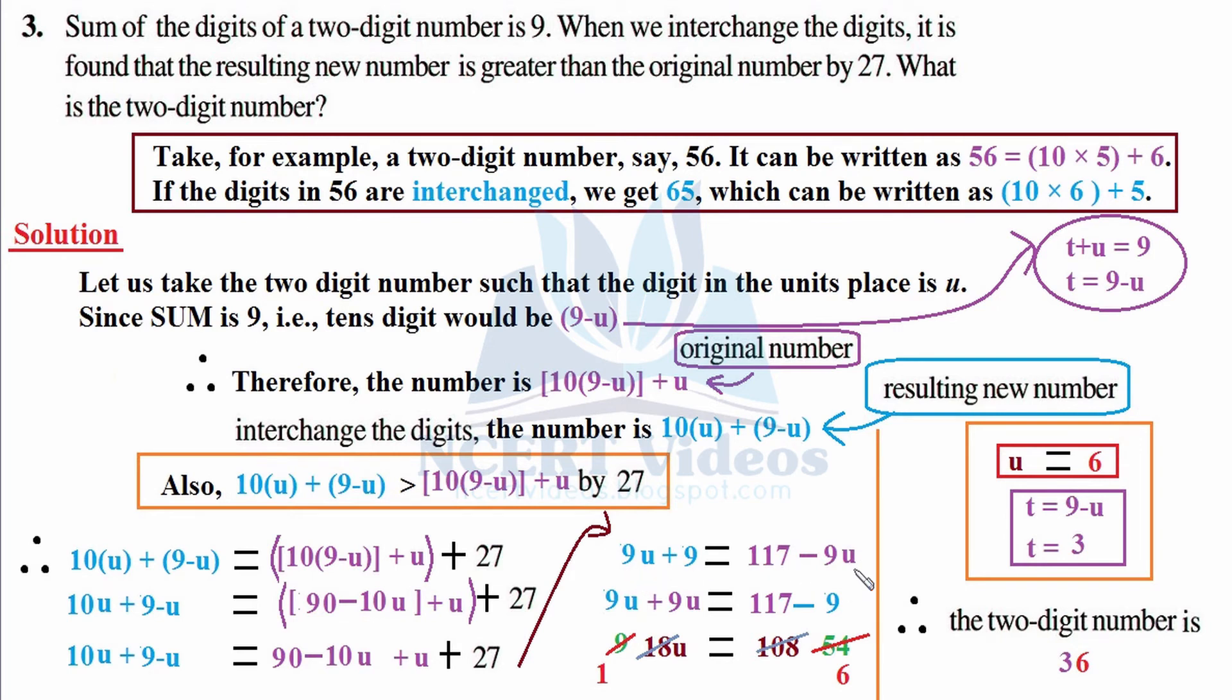9u, transposing -9u on right hand side towards left hand side, it becomes +9u. We were left with 117 on right hand side, and transposing +9 from left to right, it became -9.